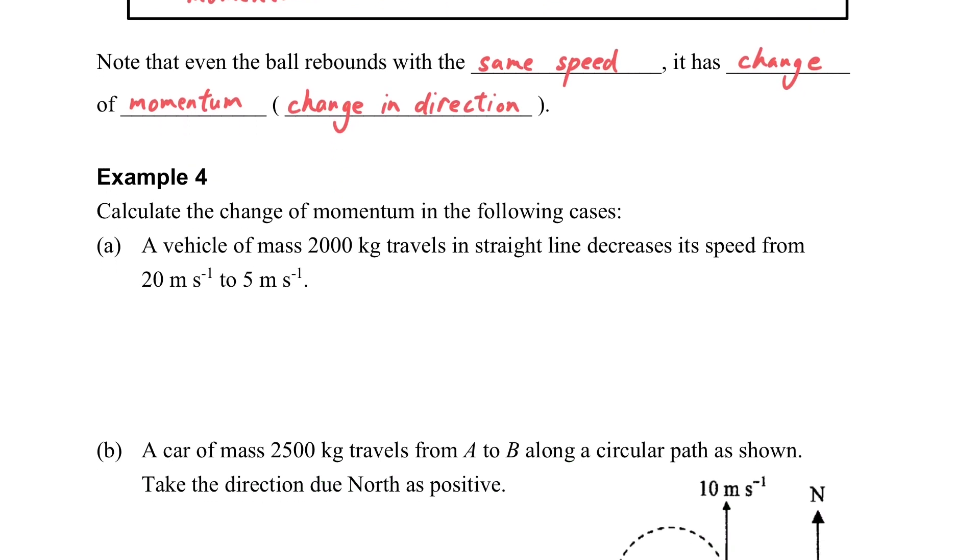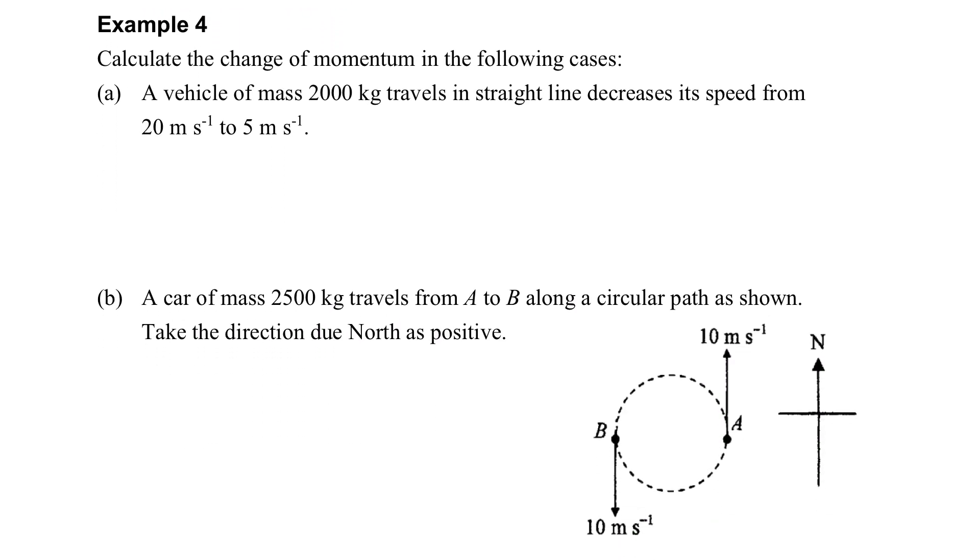Let's consider some examples. Example 4 here. So we have a mass of 2000 kg which moves from 20 to 5 m per second. So what is the mv minus mu? The v is 5, the u is 20. So we will get a negative value of the change of momentum here.